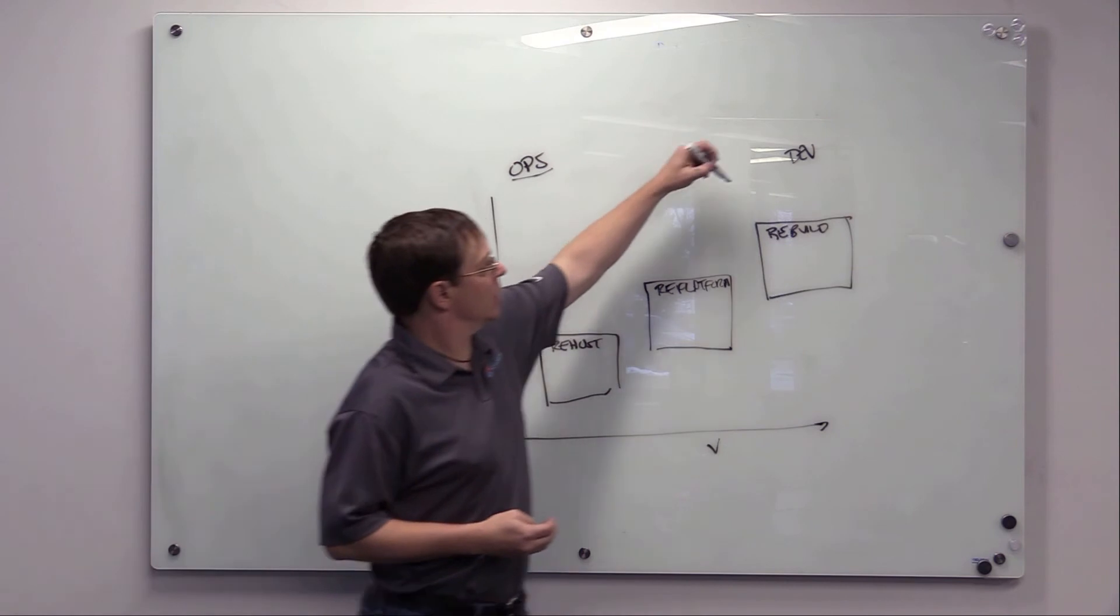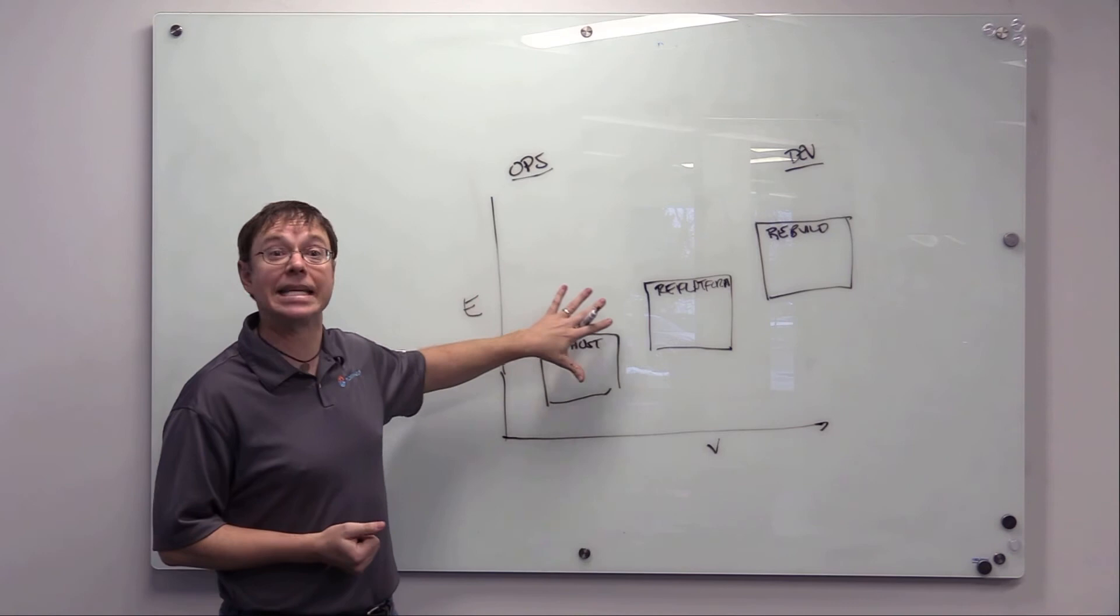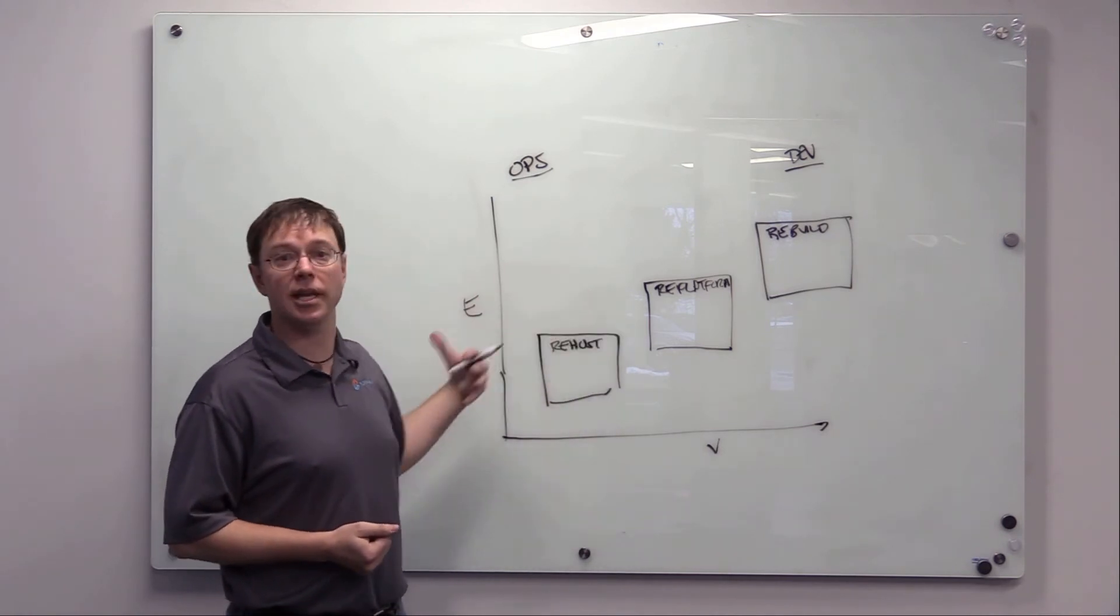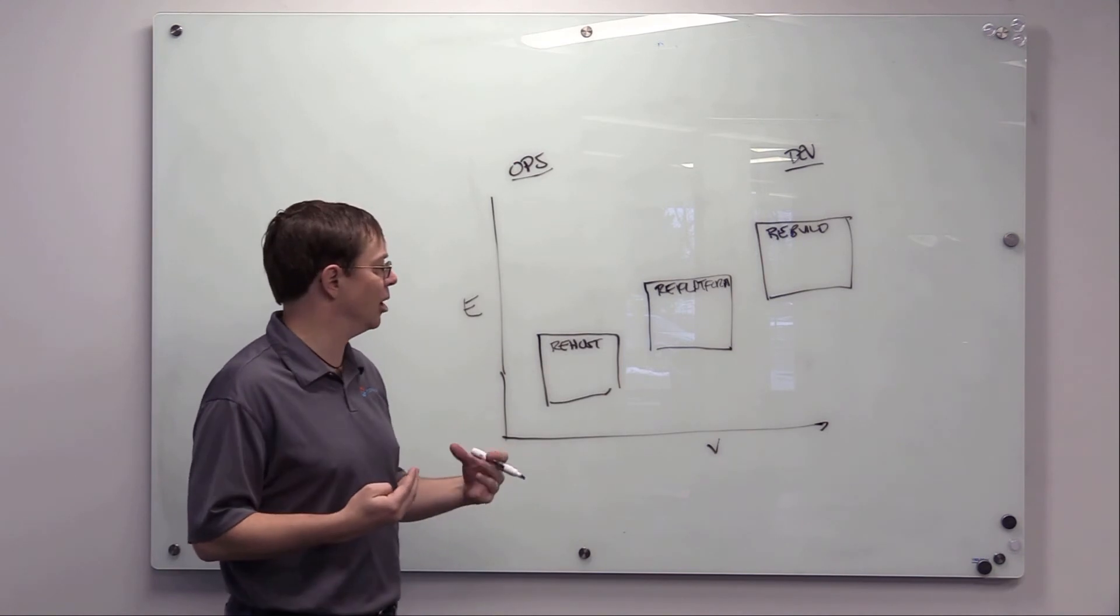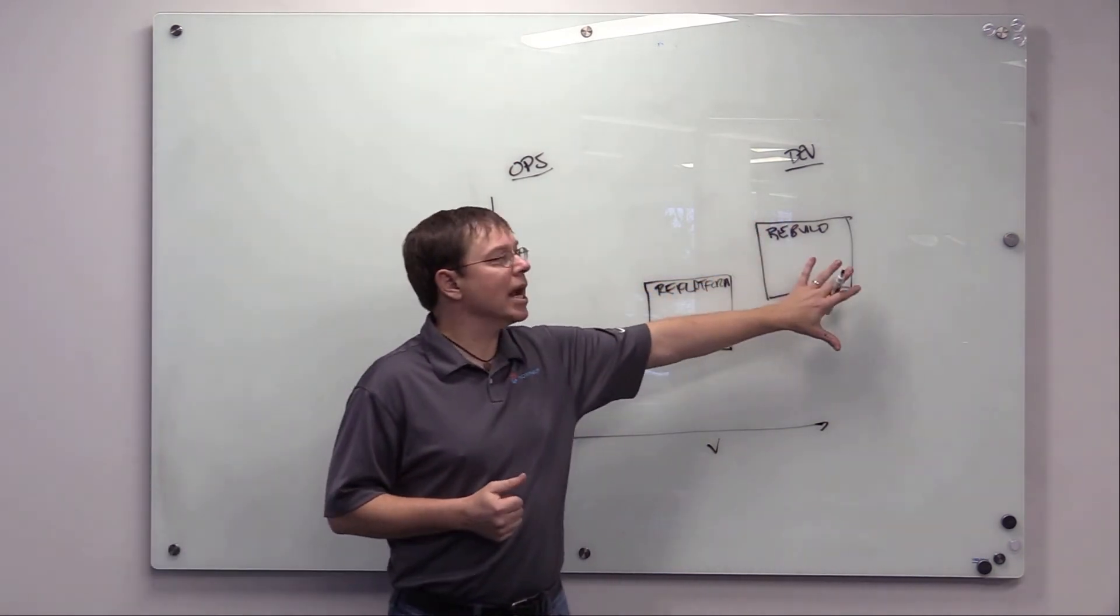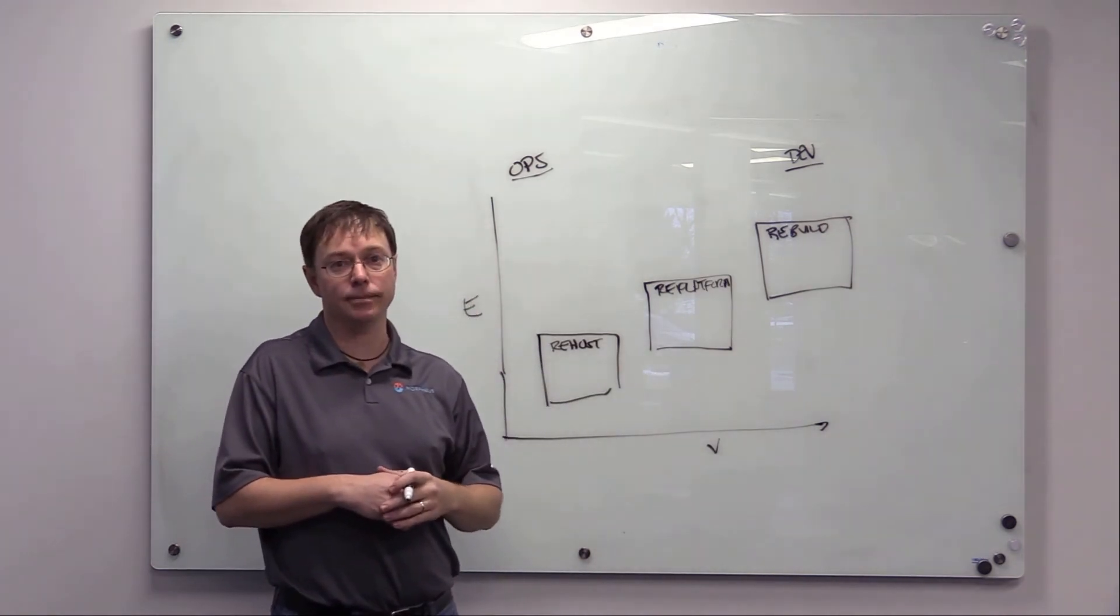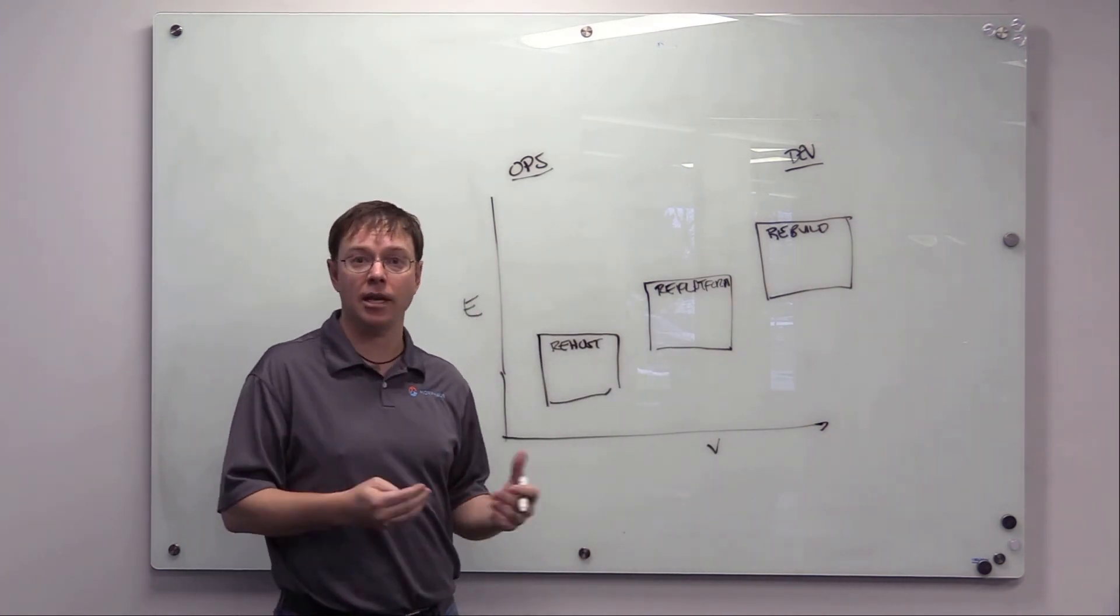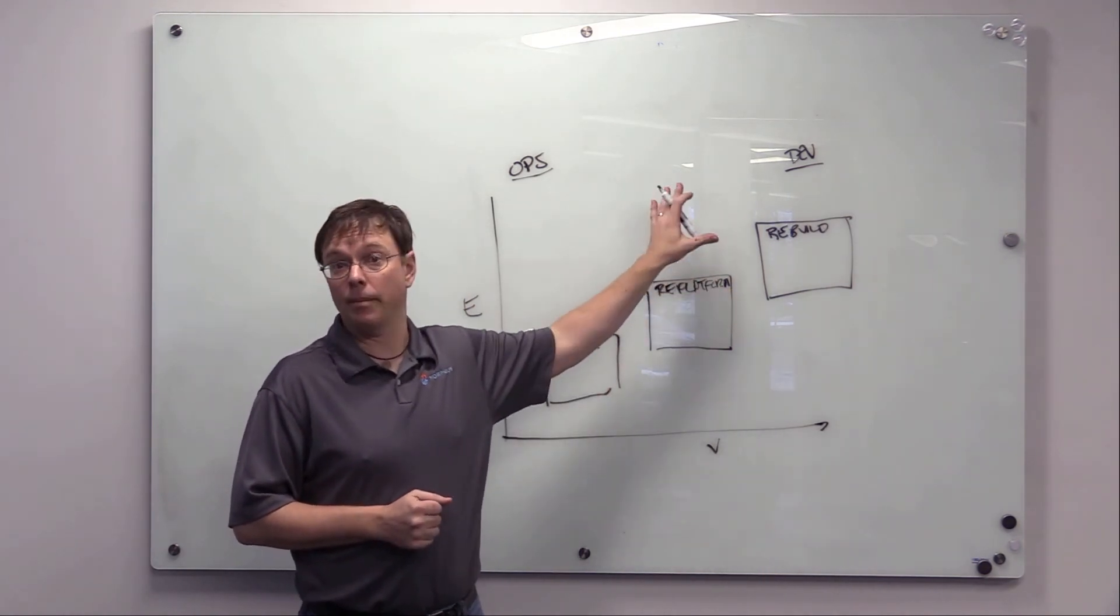If we apply this to cloud management platforms, a lot of the early day CMPs were very focused on the left-hand side of this chart—command and control, setting up governance and policy. On the right-hand side, you've got new cloud-native technologies: Kubernetes stacks like OpenShift, cloud-native infrastructure as code stacks like CloudFormation from AWS,